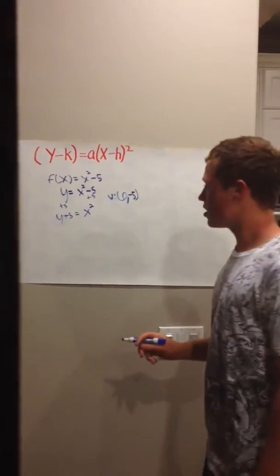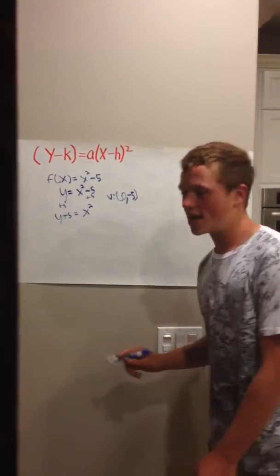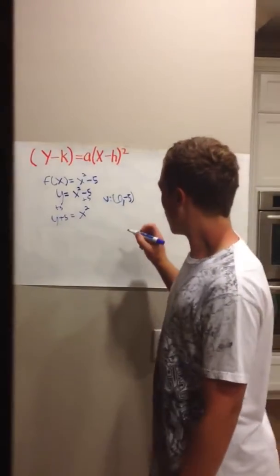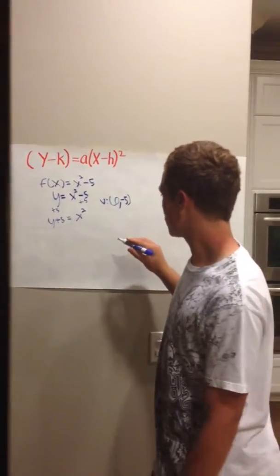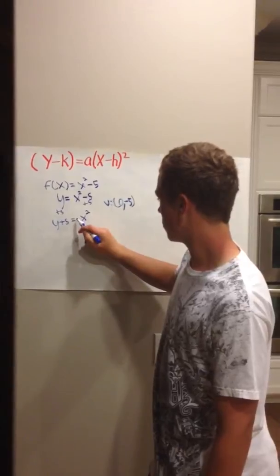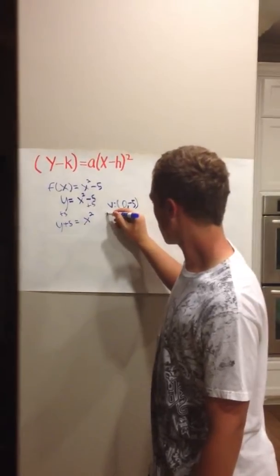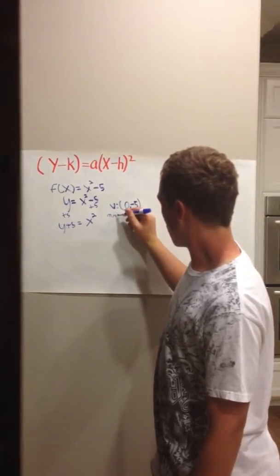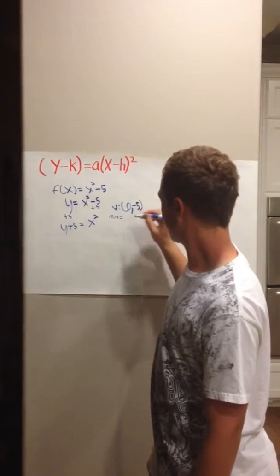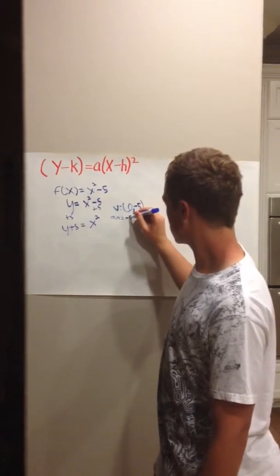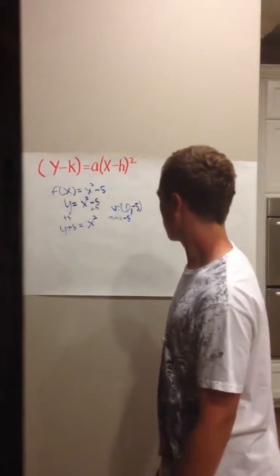Now that you have your vertex, you can also find out if it's a maximum or minimum. And it's going to be a minimum since you have no negative right here. And your minimum will equal negative 5 since that will be the lowest point you will hit on your y axis.